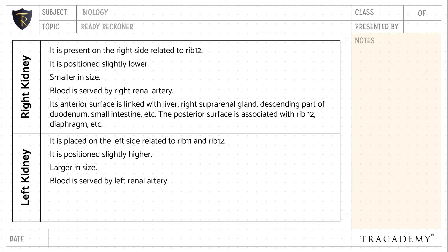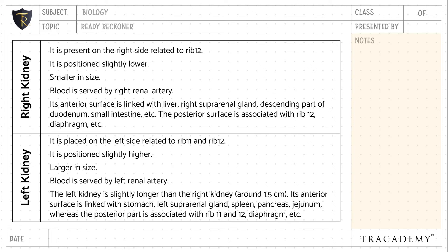The anterior surface of the right kidney is linked with the liver, right suprarenal gland, descending part of the duodenum, small intestine, etc. The posterior surface is associated with rib 12, the diaphragm, etc.